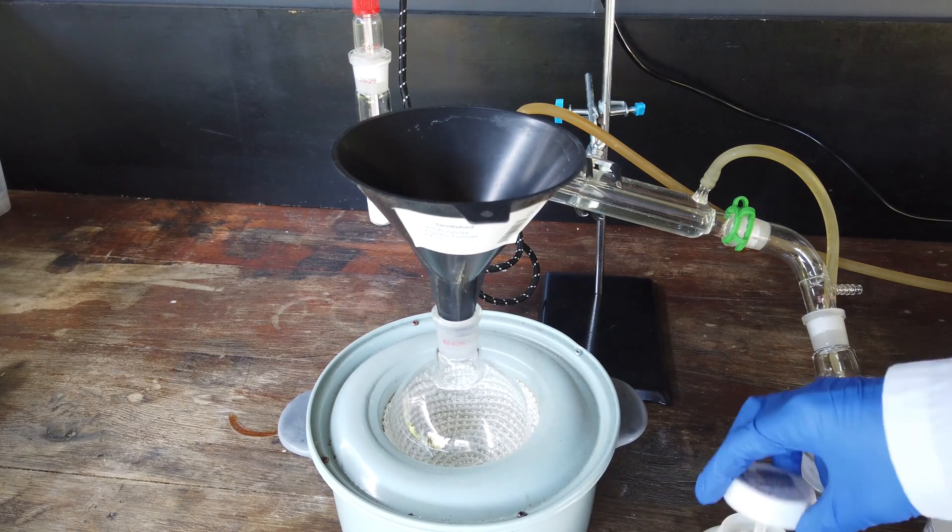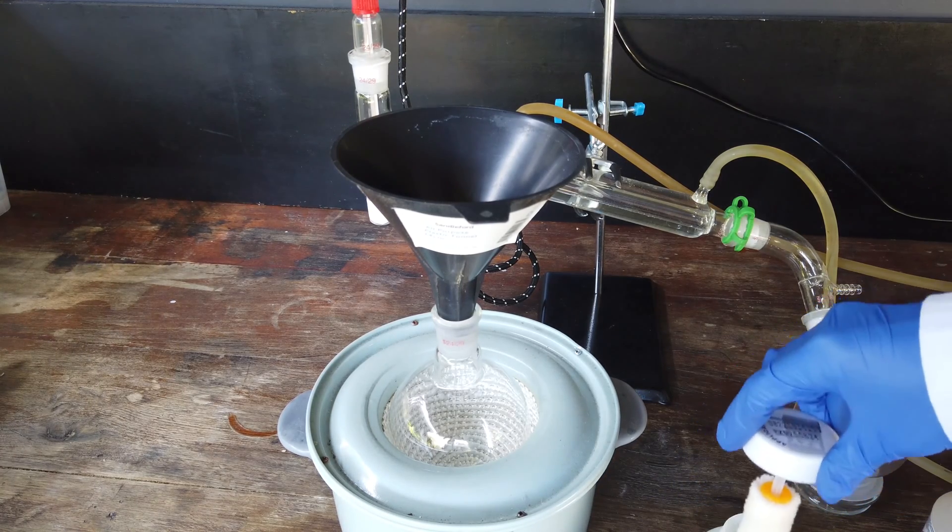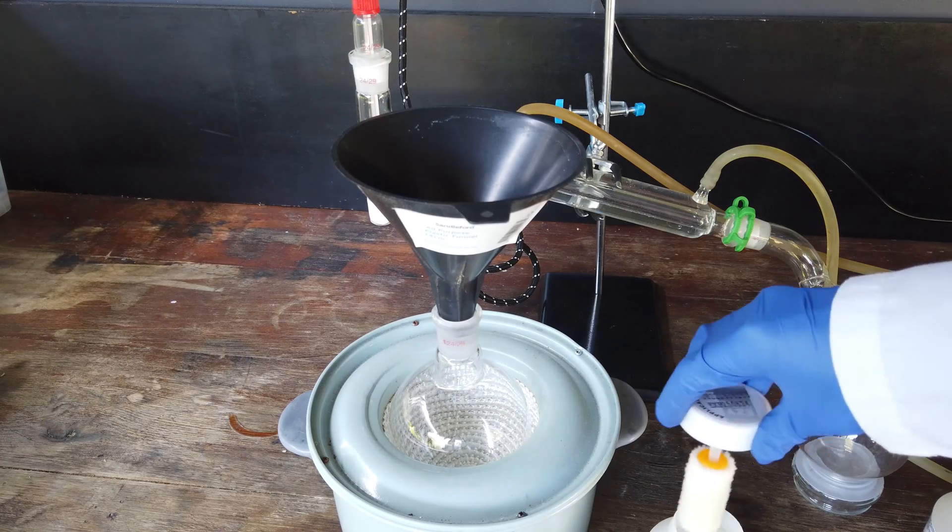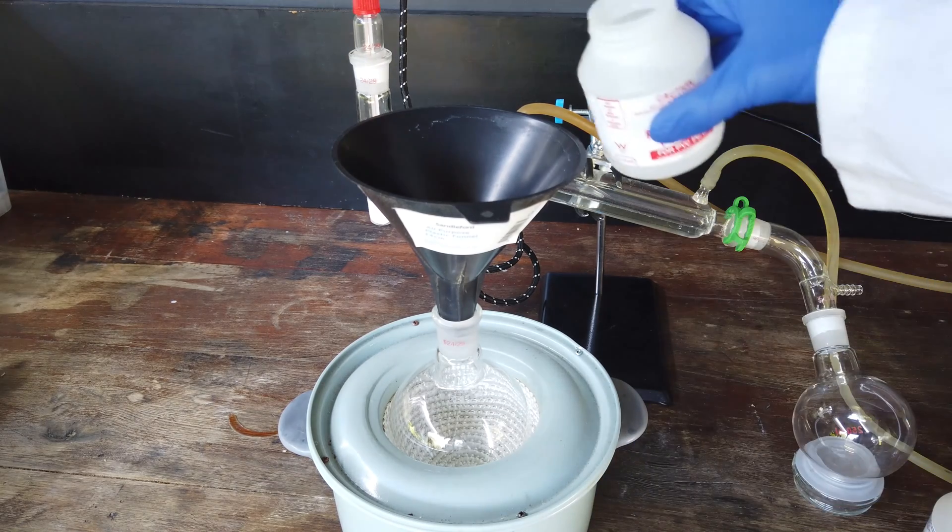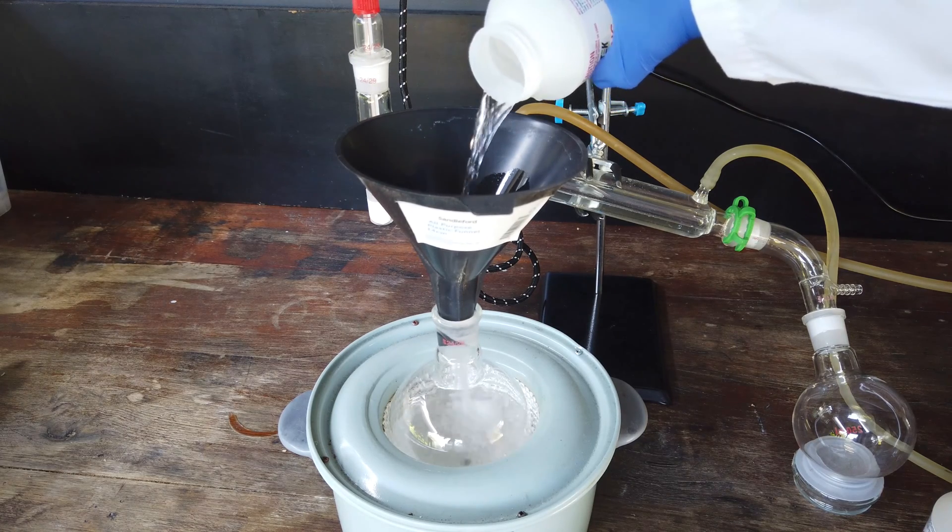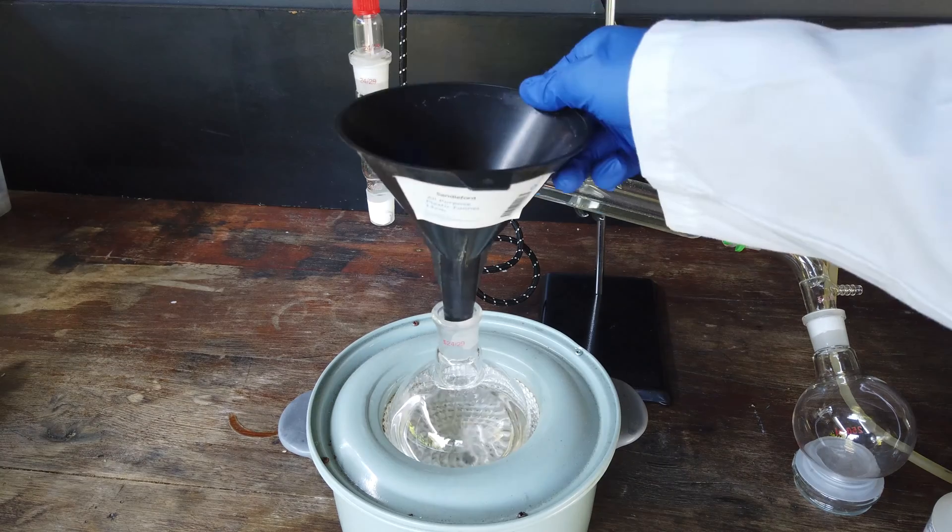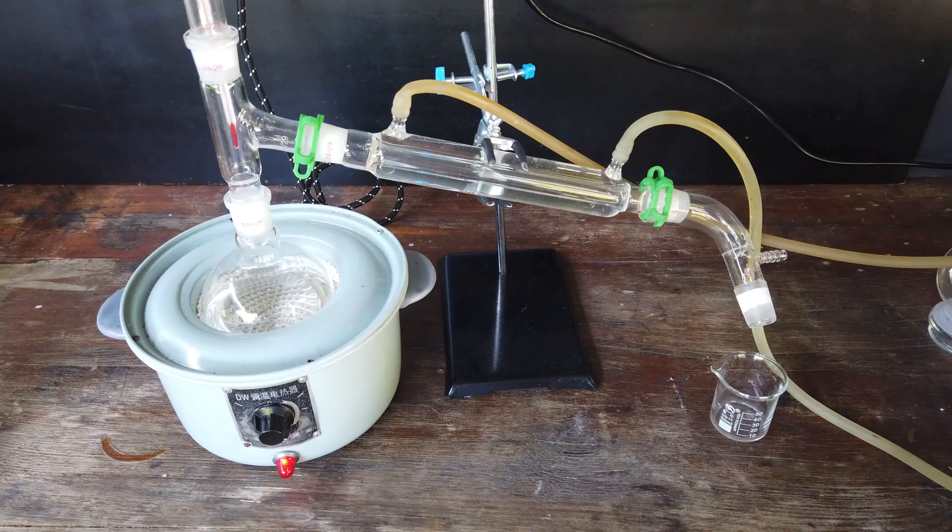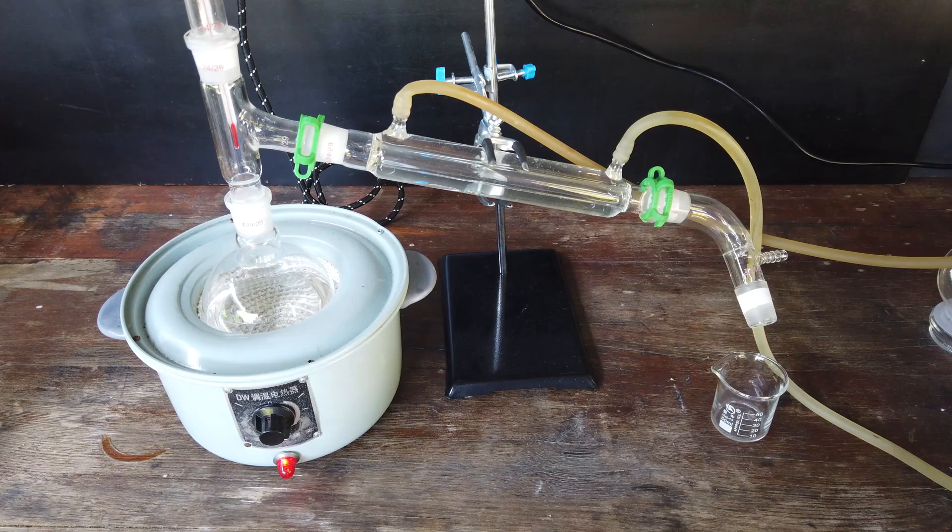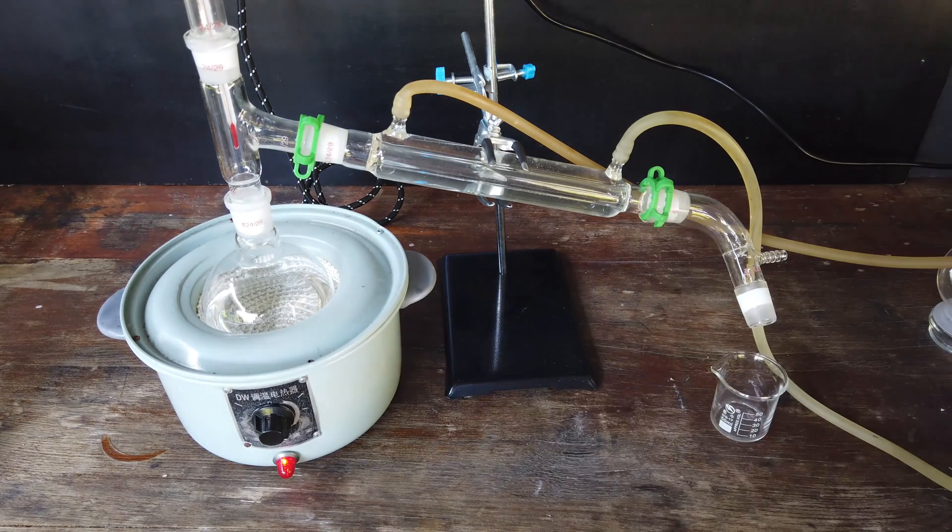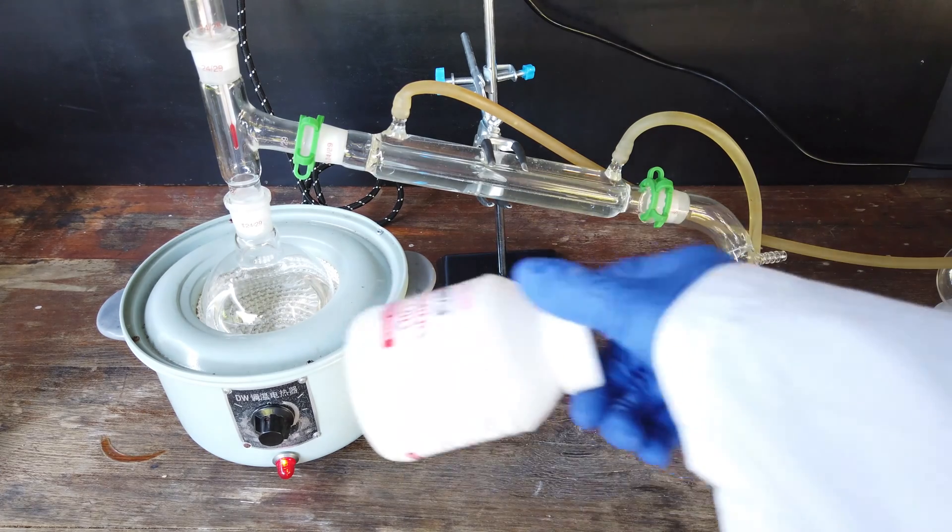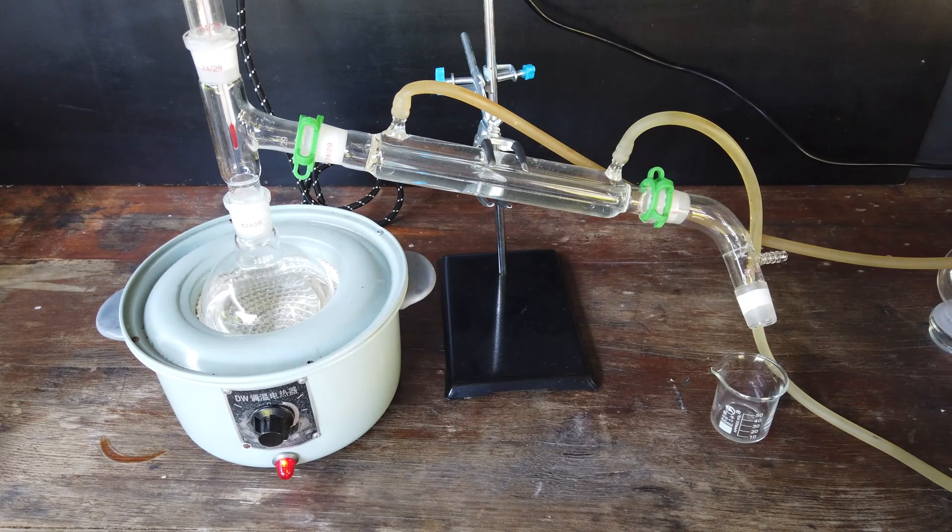First things first, we need to put our methyl ethyl ketone into the boiling flask. The container comes with this application brush, which is a little bit annoying, but we'll cope. Just pouring it straight in. And that's ready to go. I'm going to have to do this in three runs because the size of my current distillation setup only allows for the distillation of around 250 milliliters of solvent at a time. We have three 250 milliliter containers of the solvent, so we're going to need to do this three times.